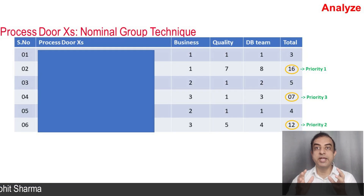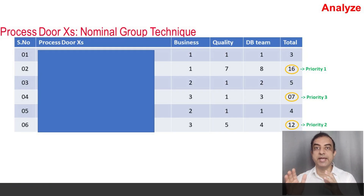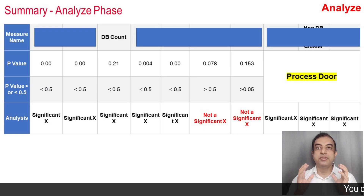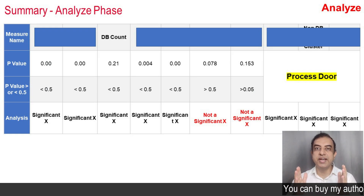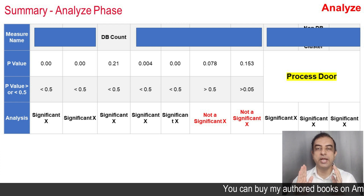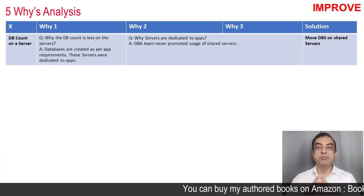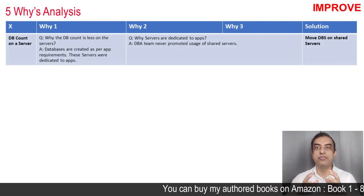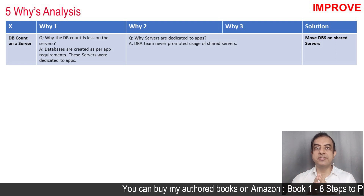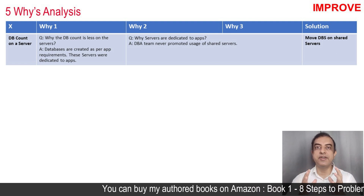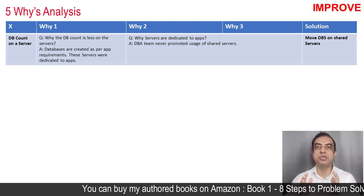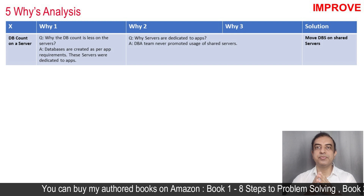Next, the team used the Nominal Group Technique to prioritize the process door X's. This is a summary of the Analyze phase where all the significant X's are highlighted through both data door and process door. Next, the team moved to the Improve phase and used 5-Why analysis to identify actionable solutions to the significant X's.